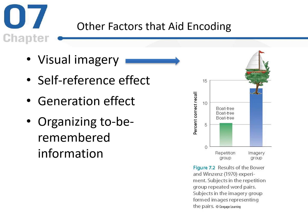We can also look at organizing information to be remembered. This is where we are studying information that's organized — for example, using a story or some kind of framework. We're trying to organize in some way the information we need to remember. We find that if there is some sort of organization of this information, then it is better remembered.